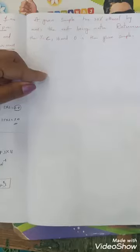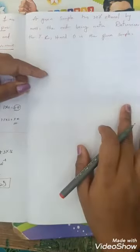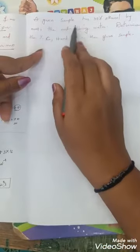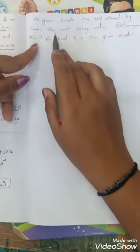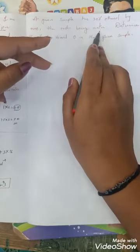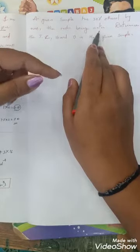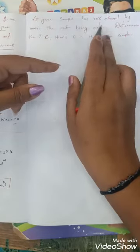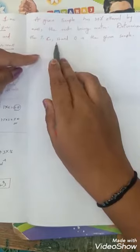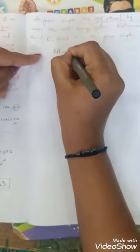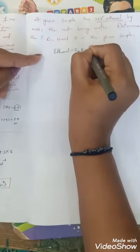Clear? Now we will see one more question. A given sample has 30% ethanol by mass, the rest being water. It is a mixture containing ethanol plus water, so 30% is ethanol and remaining is water. We need to determine the percentage of carbon, hydrogen and oxygen. Here it is about ethanol. What is the formula of ethanol? Ethanol formula is C2H5OH.